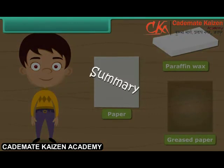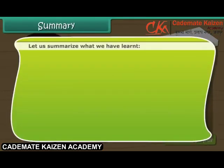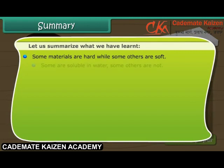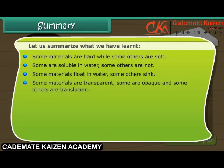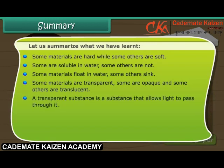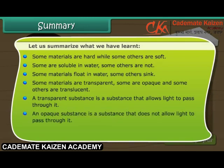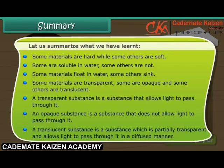Let us summarize what we have learned. Some materials are hard while some others are soft. Some are soluble in water, some others are not. Some materials float in water, some others sink. Some materials are transparent, some are opaque, and some others are translucent. A transparent substance allows light to pass through it. An opaque substance does not allow light to pass through it. A translucent substance is partially transparent and allows light to pass through it in a diffused manner.